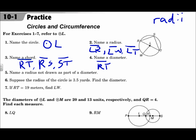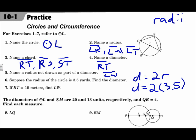Number five asks for a radius not drawn as part of a diameter. The two we just used were LR and LT, so the one that's not is radius LW. Number six: suppose the radius of a circle is 3.5 yards — find the diameter. The diameter equals two times the radius, so D = 2 × 3.5, giving a diameter of 7 yards.